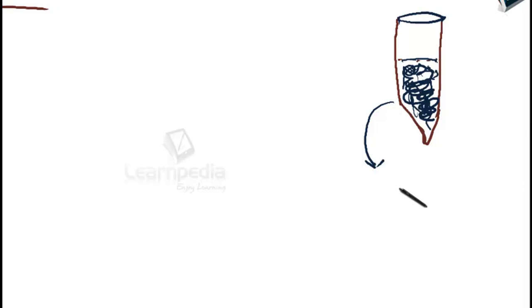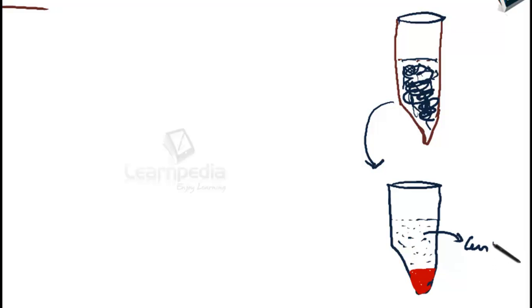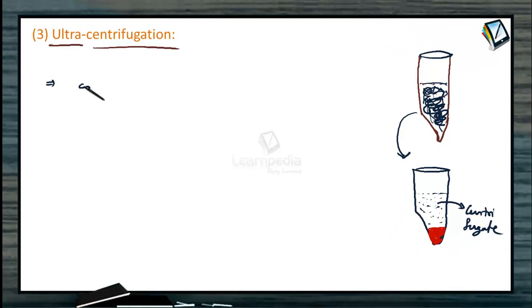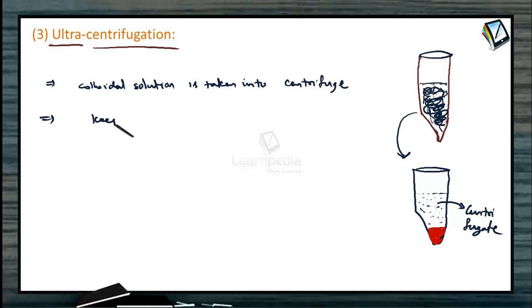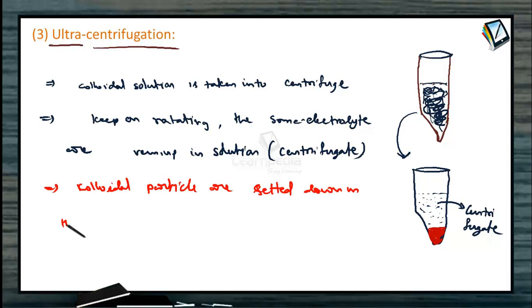The remaining electrolytes stay in solution. Finally, the colloidal solution settles down, and the impurities remain on the surface above the colloidal solution. They can easily be removed. The solution which remains on the surface of the colloidal solution is called the centrifugate. This centrifugate is easily removed. The electrolytes are present in the centrifugate because of their lesser mass. So in this process, the colloidal solution settles down as a precipitate, while the electrolytes remain in the centrifugate. The two can be easily separated.